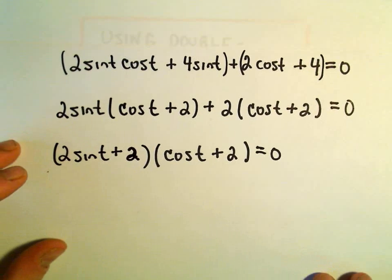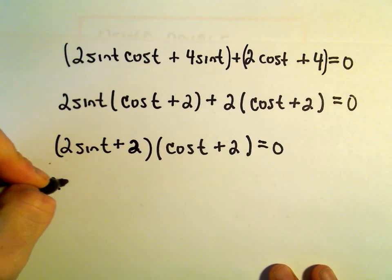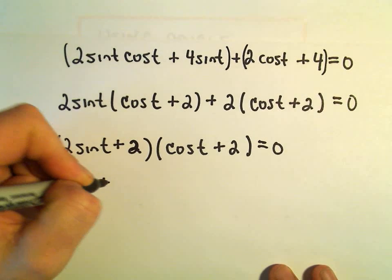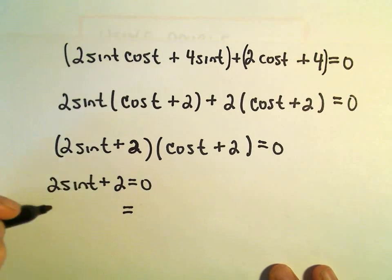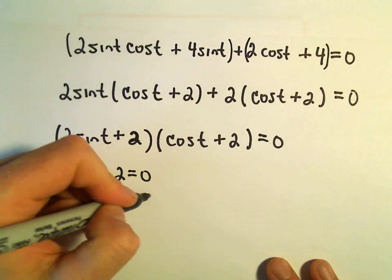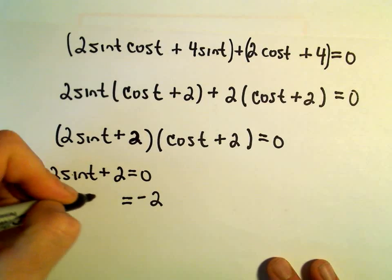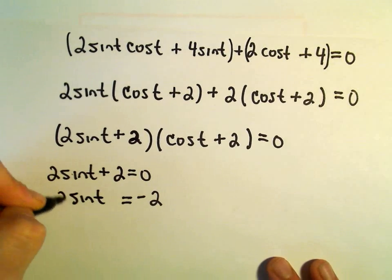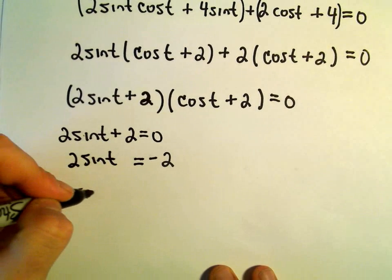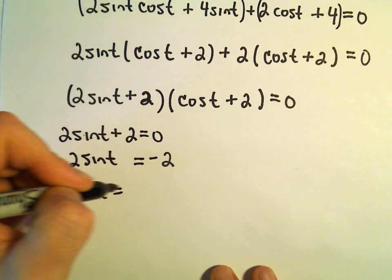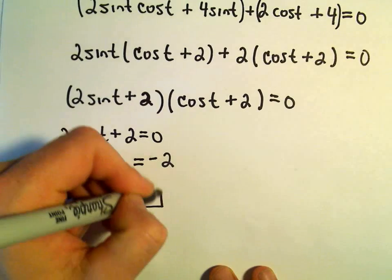And now we're simply just going to set each factor equal to 0. So 2 sine t plus 2 equals 0. Well, we could subtract 2 from both sides. Then we would have 2 sine t equals negative 2. Well, just divide both sides by 2. That will give us sine of t equals negative 1.